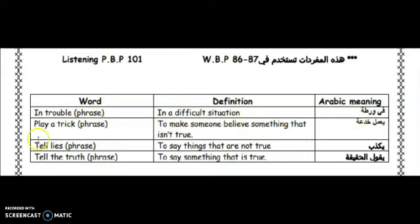The next one is 'play a trick,' which is also a phrase. The meaning of 'play a trick' is to make someone believe something that isn't true. The next one is 'tell lies' — to say things that aren't true. And the last one is 'tell the truth' — a phrase meaning to say something that is true.